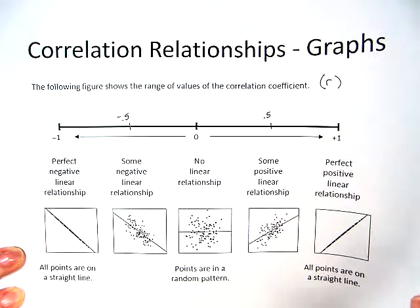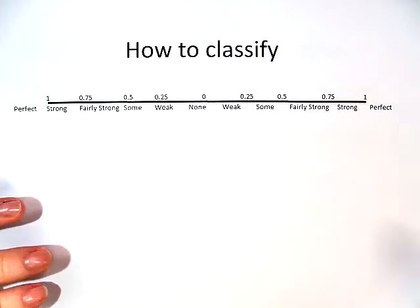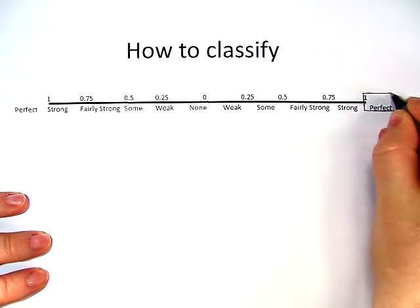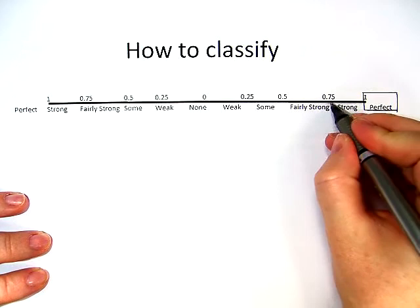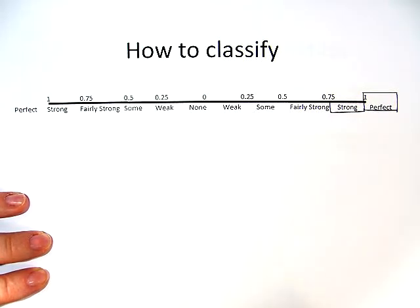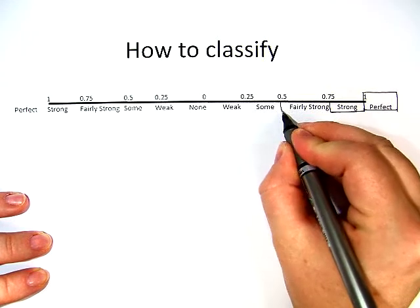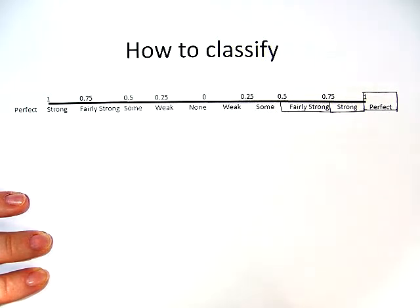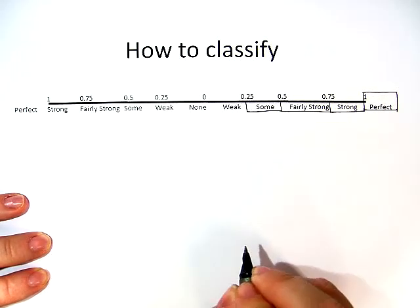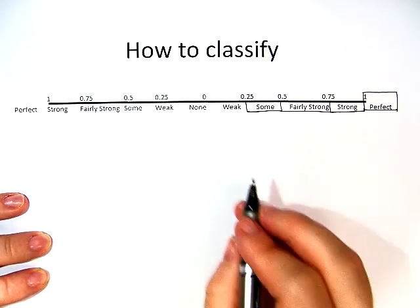Now, with this we actually classify it very carefully. If you are 1, you are perfect. But anything between 0.75 and very close to 1 is considered strong. Anything between 0.5 and 0.75 is considered fairly strong. Anything between 0.25 and 0.5, there is some relationship.